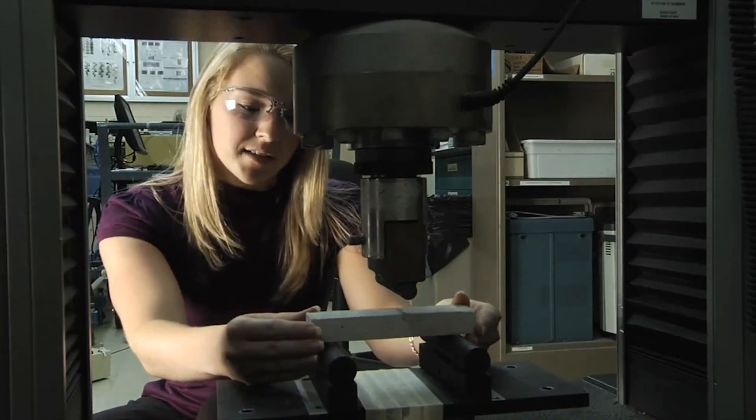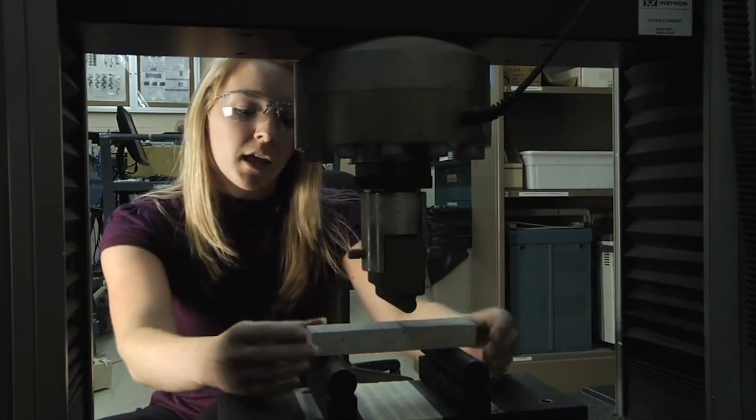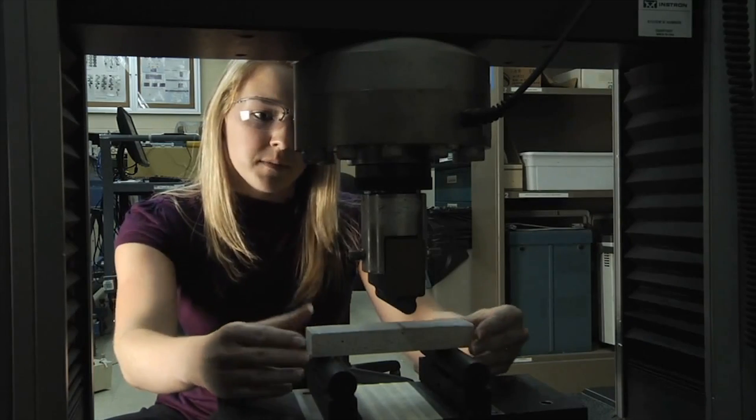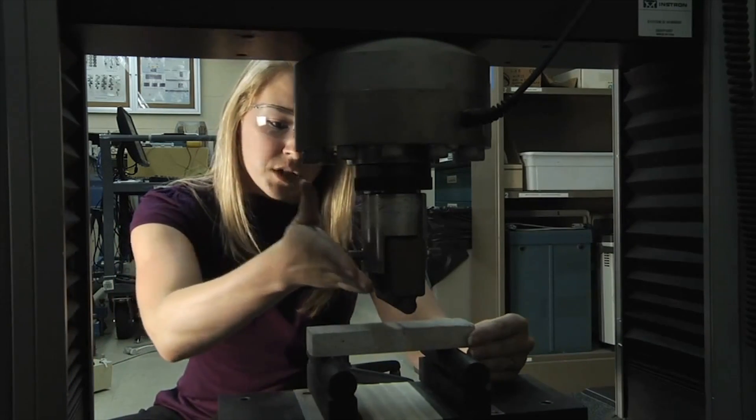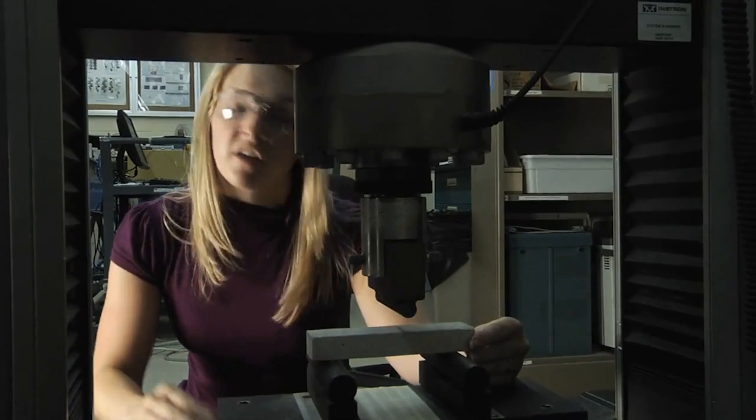So this experiment is a three-point bend test and this tests the flexural or bending strength of the material. You have these two support beams and this one down the middle will supply a force directly down the center and it'll tell you the flexural strength of the material.